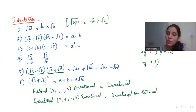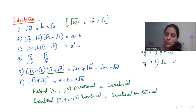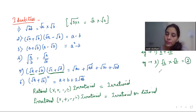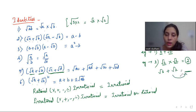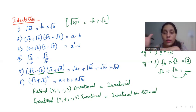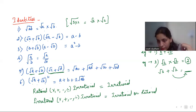Second case: an irrational number combined with another irrational number can sometimes give an irrational or a rational result. For example, root 2 multiplied by root 2 gives 2, which is rational. But root 3 multiplied by root 2 gives root 6, which is irrational. So when two irrational numbers are combined, you might get a rational or an irrational number.